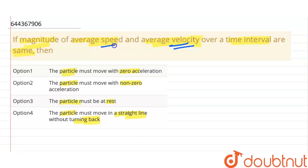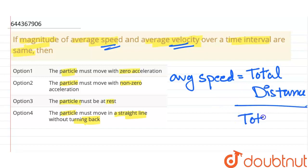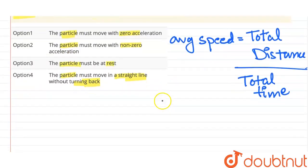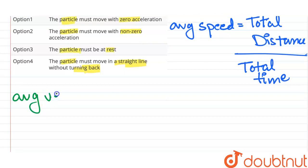We know what average speed is. The formula for average speed is total distance over total time, and similarly, the formula for average velocity is total displacement over total time.